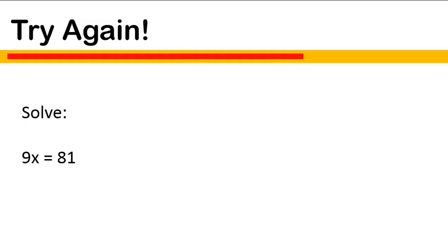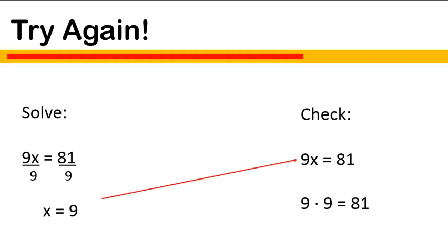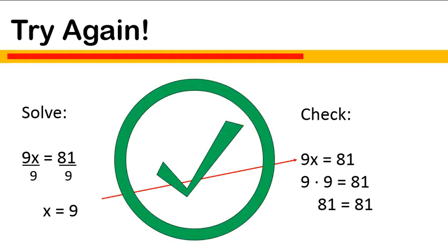So, then we can go back and try again. Dividing both sides by 9, I get x is equal to 9. Okay, well, that makes sense. I'm going to check my work. 9 times 9 is 81, and that is correct. Woohoo! I found my mistake and I was able to fix it. So, just wanted to emphasize the importance of checking your work, because sometimes we make mistakes, and it's good to make sure that we have a backup plan.